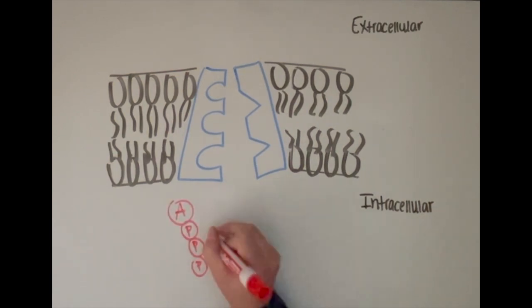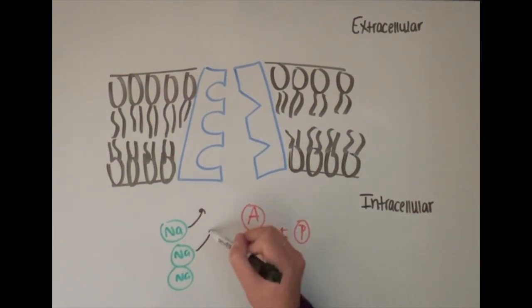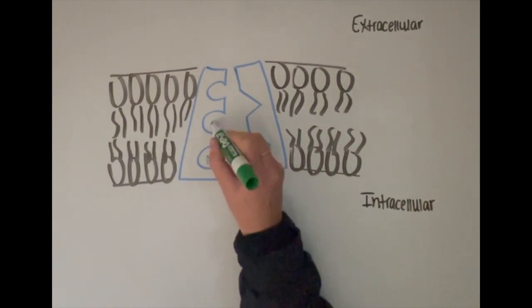The first step in this process is for one molecule of ATP to get phosphorylated to ADP and one phosphate. Following the phosphorylation of ATP to ADP and phosphate, we have three sodium ions being brought from the intracellular side to the pump. These three ions and one phosphate bind to the sodium potassium pump.